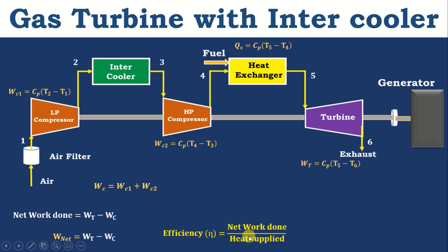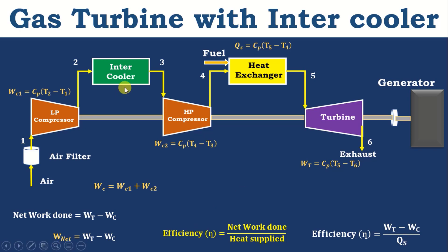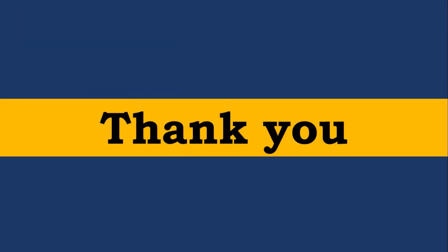Efficiency is output divided by input. The output is W_net and the input is only the heat added in the combustion chamber. So efficiency equals (WT minus WC) divided by QS. In the next lecture, we will discuss the effect of the intercooler — whether it is a perfect intercooler or imperfect intercooler in the gas turbine. If you like this video, like, share, and subscribe. Thank you.